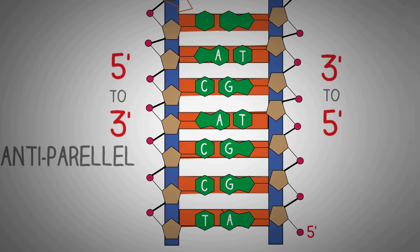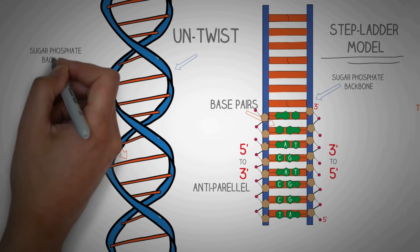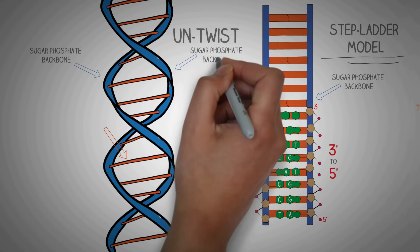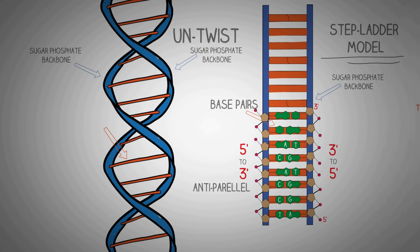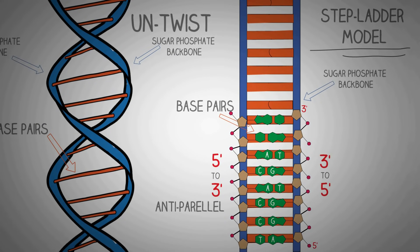Complementary base pairing is very important because it maintains a proper distance between the two strands of the DNA, which is essential for the stability of the double helix. Now if you look at the double helical model of the DNA, you can understand what the two helical lines represent and what the central spokes connecting these two lines are essentially made up of.